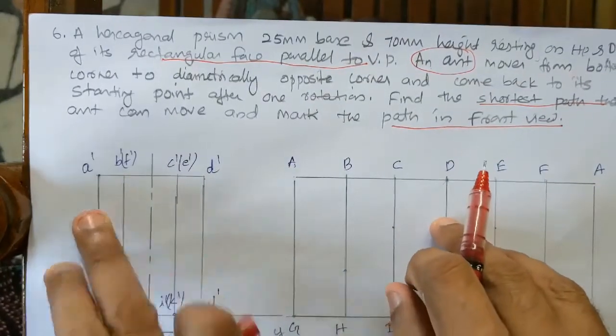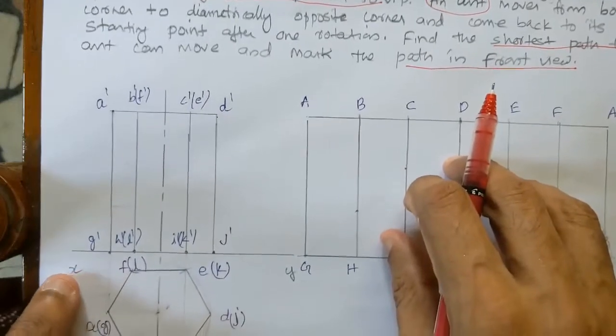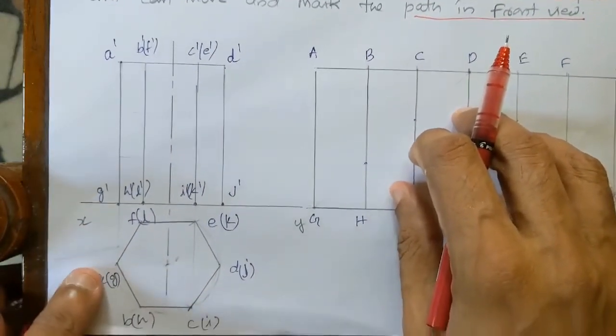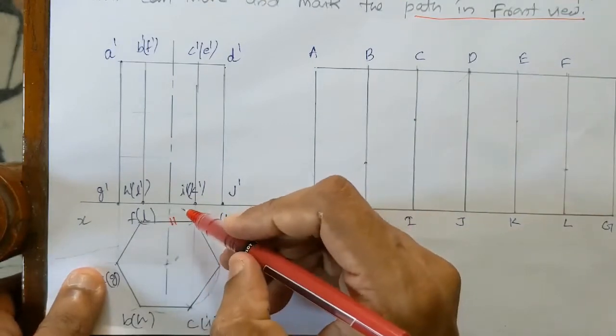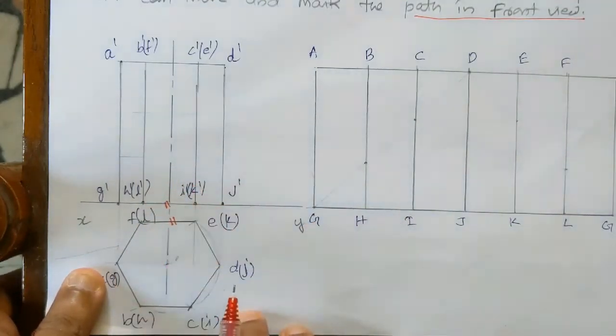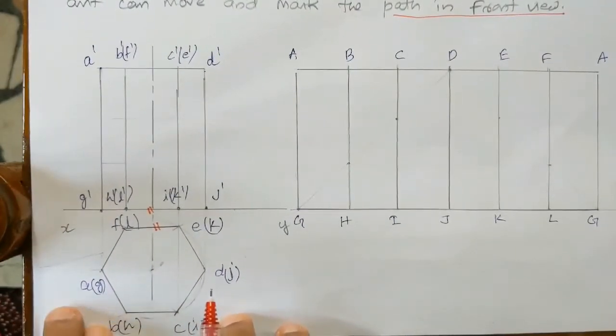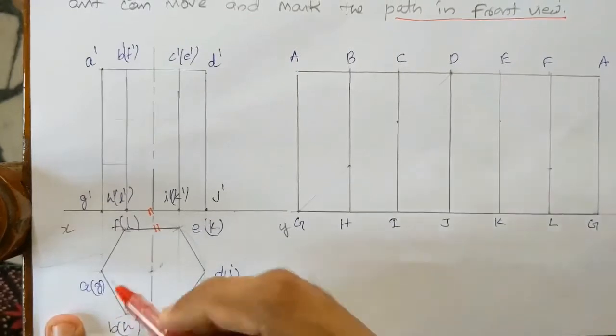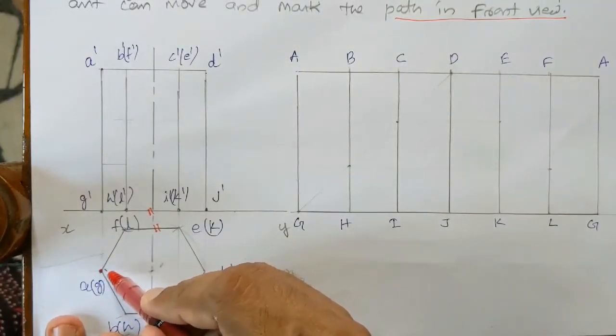That's the question. Let's start with the initial condition. Initial condition is a hexagonal prism. One of its lateral surface, rectangular surface parallel to VP. This is the first condition, the leftmost corner, first initial condition.